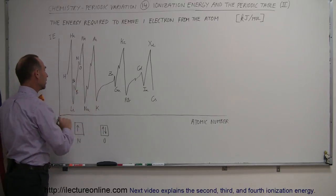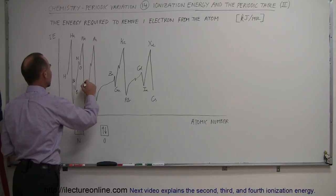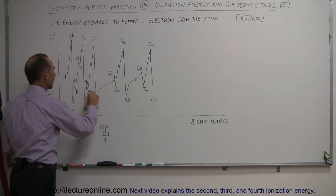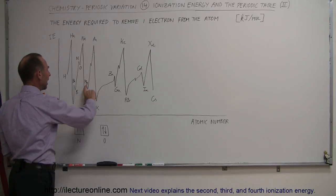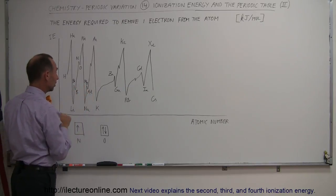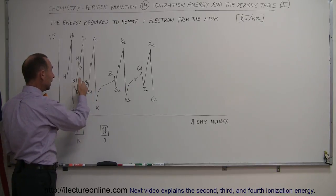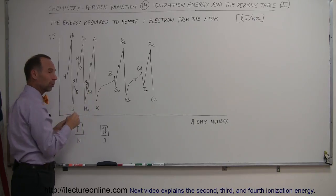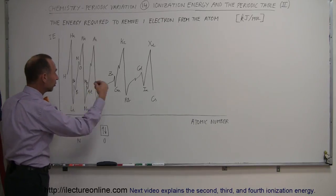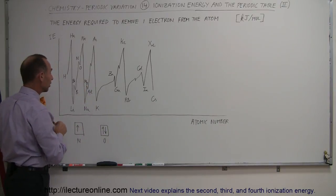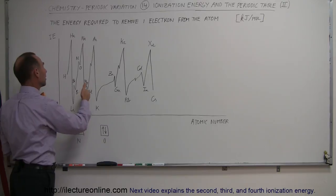The same pattern repeats. From sodium we go to magnesium, and from magnesium we go to aluminum. Magnesium has two electrons in the S-shell of the third energy level, and then we start putting electrons into the P-orbital. The first P-orbital electron for aluminum is all by itself and is more easily removed than magnesium's second S-shell electron, so the ionization energy drops.